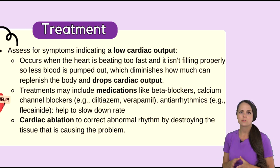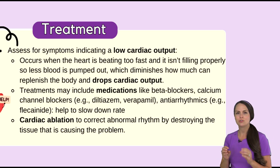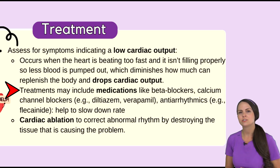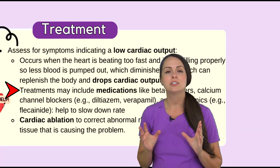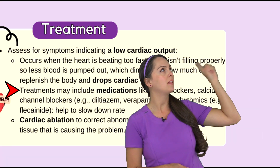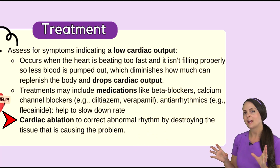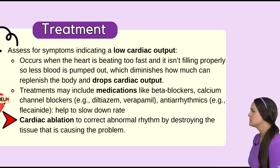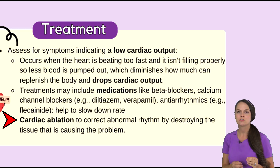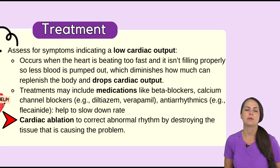Treatment for this rhythm revolves around controlling the rate, because the heart is too fast and needs to slow down so it can fill properly. We can give medications to slow that rate, such as beta blockers, calcium channel blockers like diltiazem or verapamil, or antiarrhythmics like flecainide. You can access a playlist to review these medications in depth. If medications don't work and the heart rate is not responding, another treatment option is cardiac ablation, where tissue pathways are destroyed in the heart to prevent this rhythm from occurring.